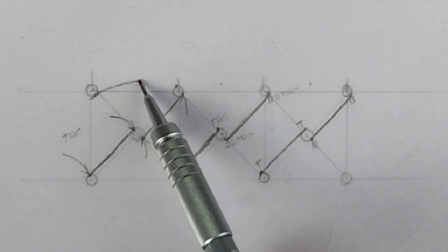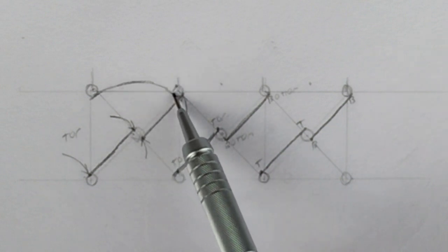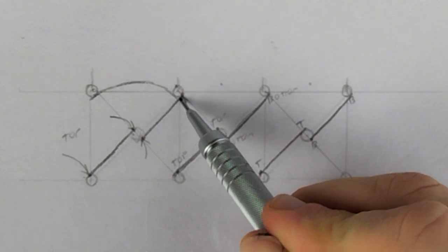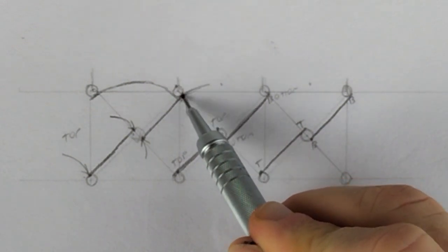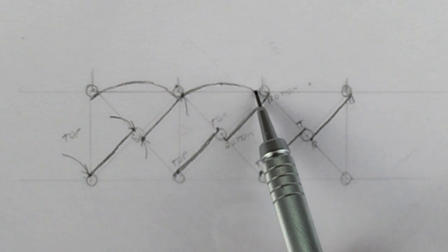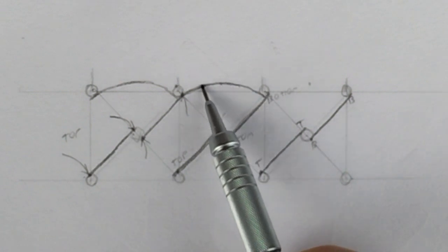Now gently draw in the arch by hand between the circles trying to get through the point in the middle. Again, this is only approximate and you can alter this whether you want the arches to go a little higher or a little lower as you desire.